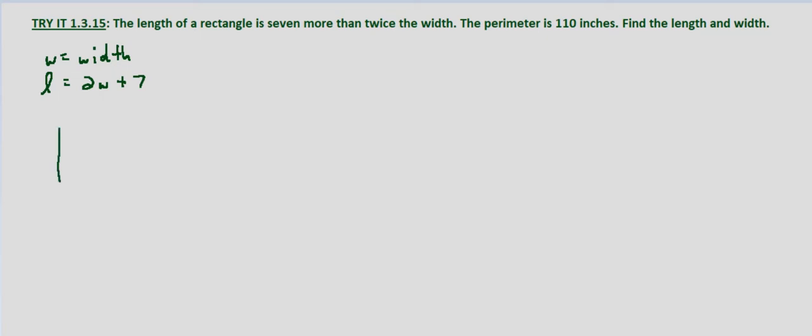Now if we draw this rectangle, bear with my lack of drawing ability here, imagine that that is a perfect rectangle. So if this is the width, and this is the width, and this is the length, but in terms of the width we have 2W plus 7, 2 times the width plus 7.